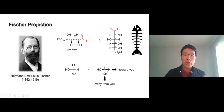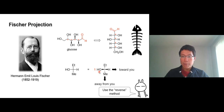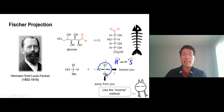When you determine R/S configuration, you have to flip whatever you get. For example, let's do the configuration: oxygen is number one, ethyl is number two, methyl is number three, and hydrogen is number four. If you rotate one, two, and three it looks like R — you have to flip it to S. That's how you do a Fischer projection configuration.